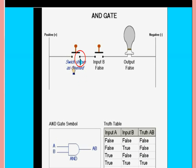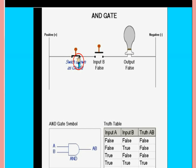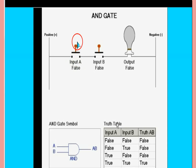Switch down means open. When it is open, it is zero; when it is closed, it is one. When it is closed, current flows. When open, no current flows.